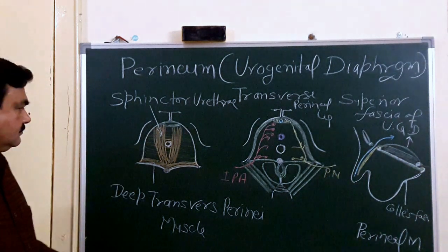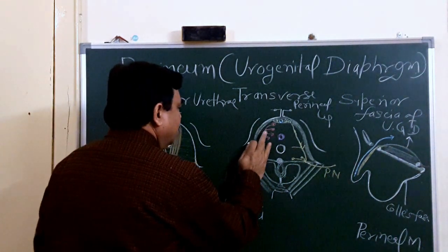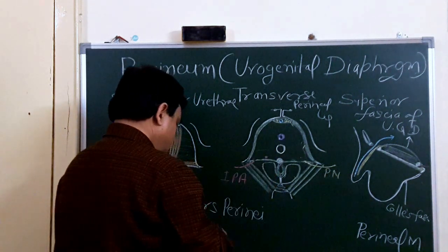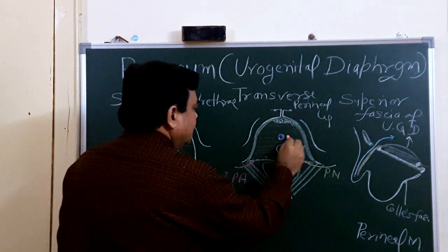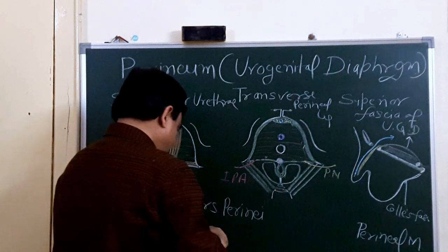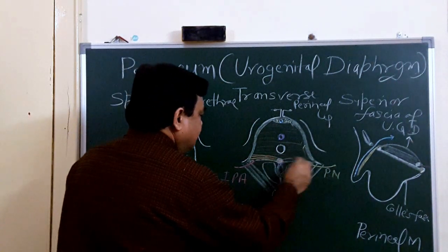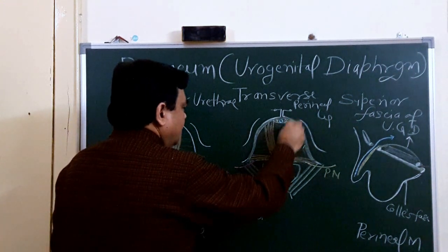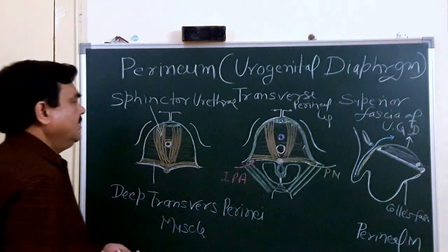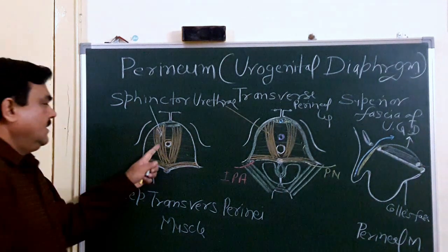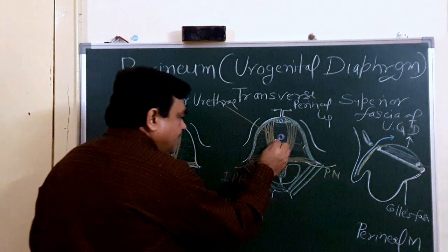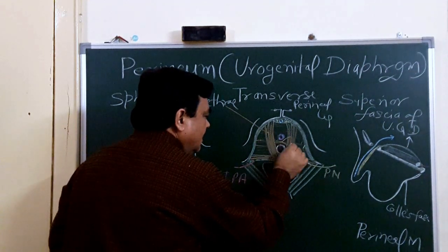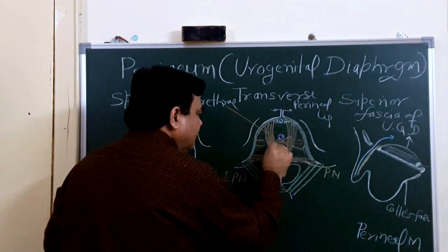In the case of female, the sphincter urethra is present with deep fibers transversely arranged. In females, the transverse fibers, which line deep, cross with each other between the urethra and vagina.